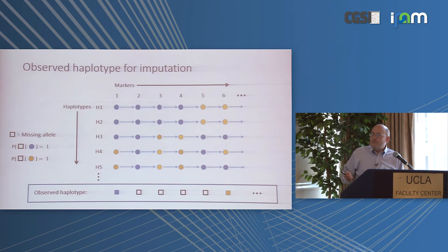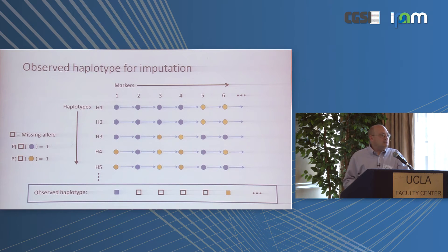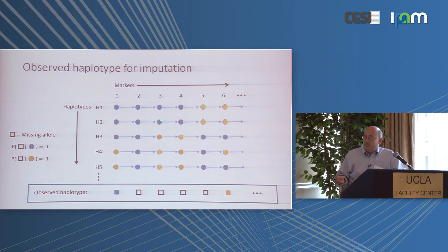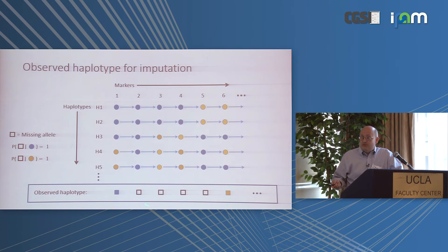Once you have the state probabilities, you can get the imputed allele probabilities. Given the observed alleles on a haplotype, you want to know what probability each hidden state has. Once you have those state probabilities, you sum up the probabilities for all blue states at a given marker to get the posterior probability of the blue allele — and the yellow states sum to give the yellow allele probability.